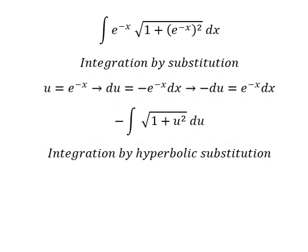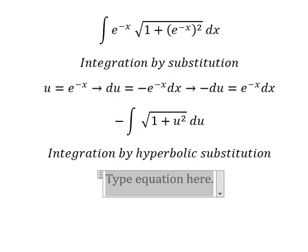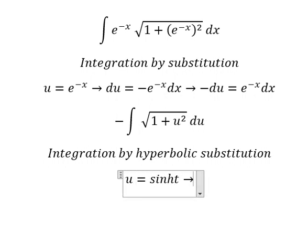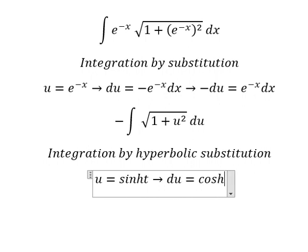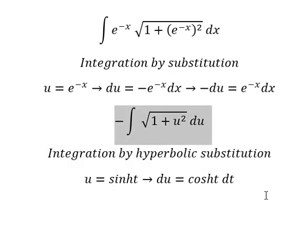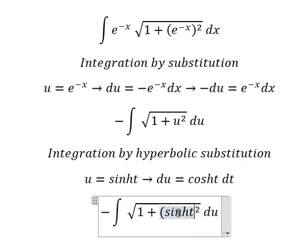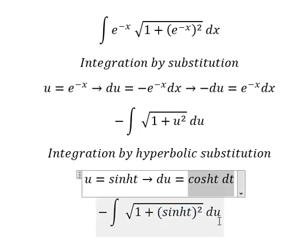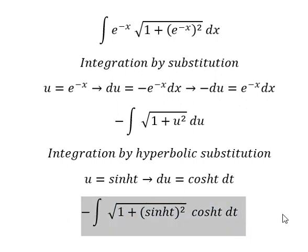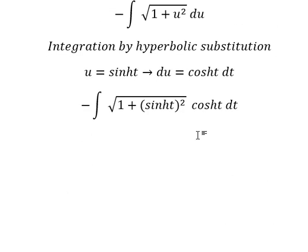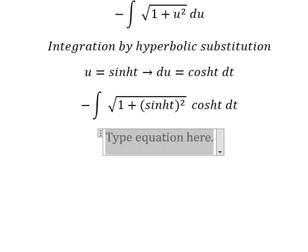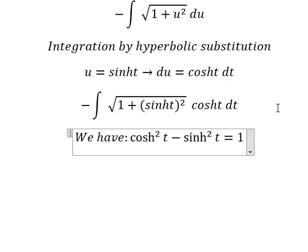So I will put u equals to sinh(t). Then we need to do the first derivative for both sides, and we have cosh(t) dt. I will put this here and move this one to the right.